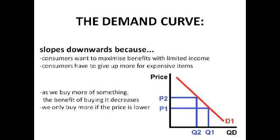To add to this, as we buy more of something the benefit of buying it decreases. For example, if there is a chocolate bar — the first one you get, say it's £1, you eat it and it's delicious. The second one, maybe you're still prepared to pay a pound, but it's not so nice. After that you're not prepared to pay as much. So as the quantity you demand increases along the x-axis, the price you're prepared to pay on the y-axis decreases — hence the curve slopes downwards.